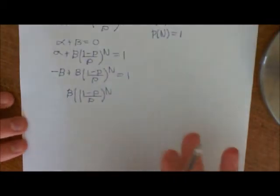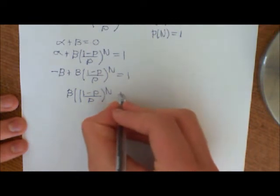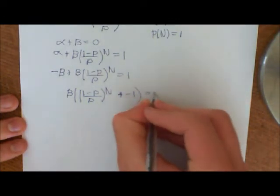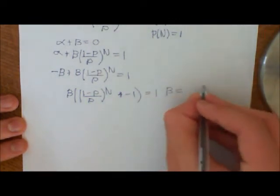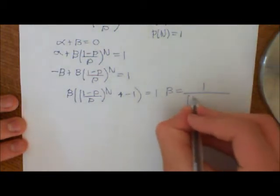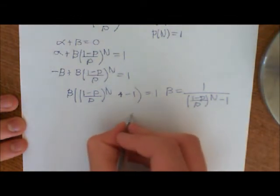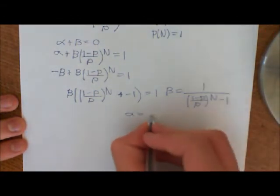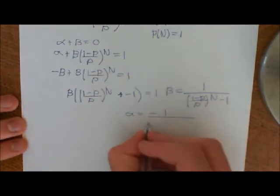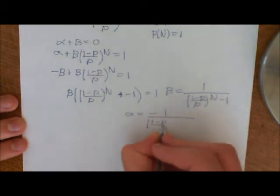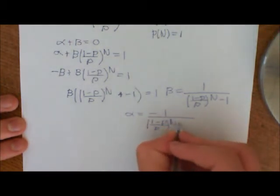Let me just move the paper up... and that implies that β is equal to 1 over ((1-P)/P)^N minus 1. And then we also know that α was equal to negative of that, so we just put -1 over ((1-P)/P)^N minus 1.